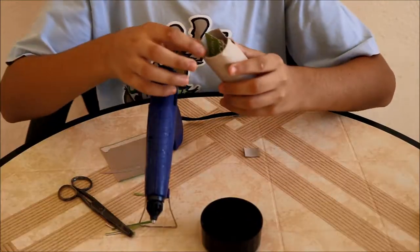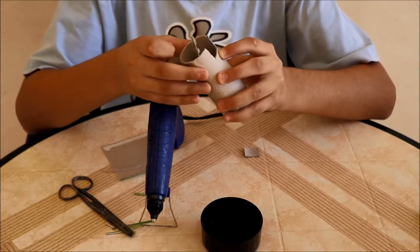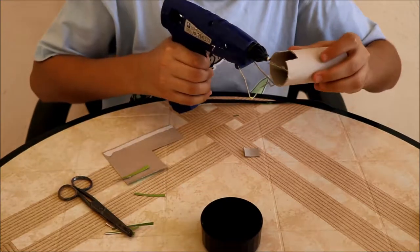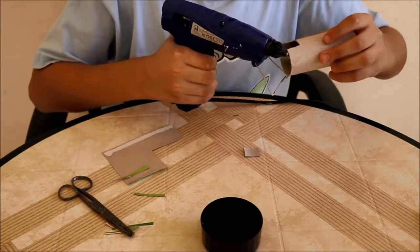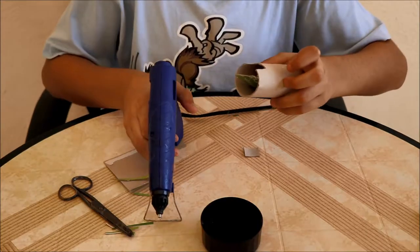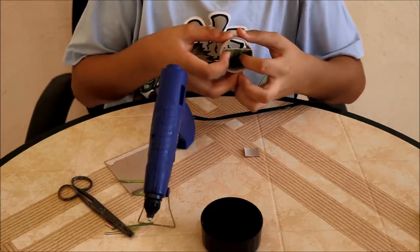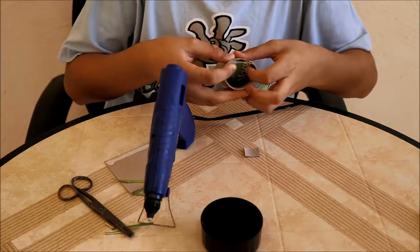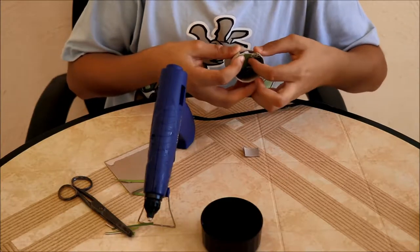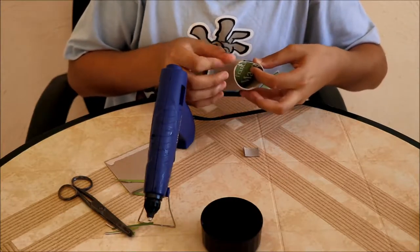Now we're going to glue this part with the toilet roll. With the glue gun. Now we're going to glue it around like this.